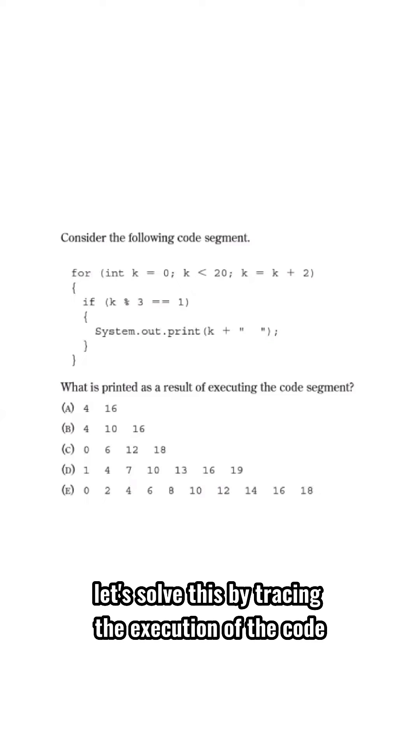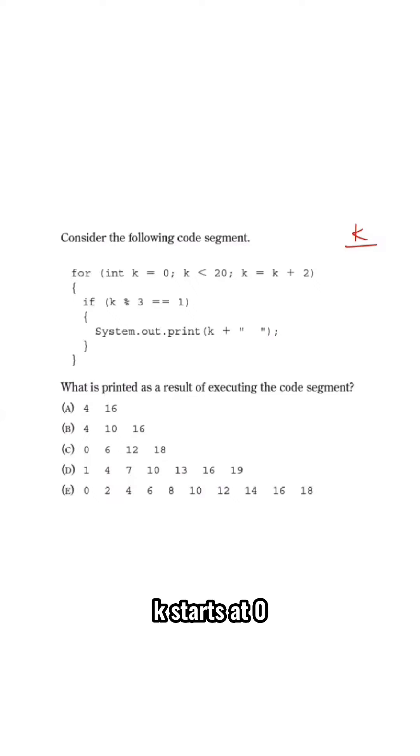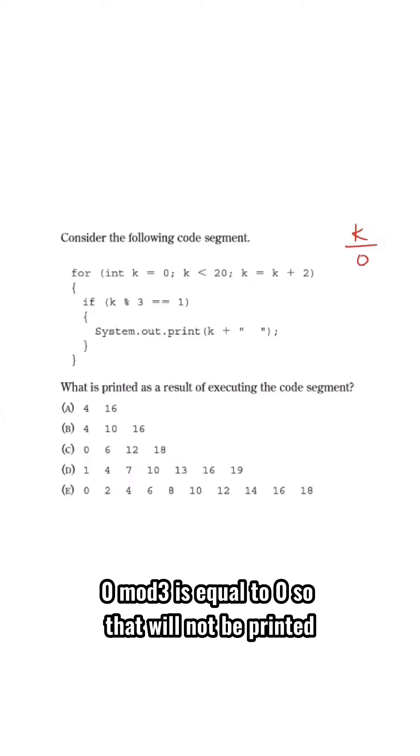Let's solve this by tracing the execution of the code. So initially, thinking about the values of k, k starts at 0. So 0 mod 3 is equal to 0, so that will not be printed.